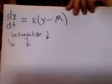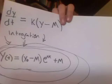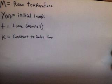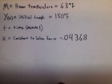After we integrate this equation, we arrive at this equation. This is the equation we want to use, but first I have to explain what each variable means. m is the room temperature, y of zero is the initial temperature of the tea, t is time in minutes, and k is the constant that we solved for in the extras video.